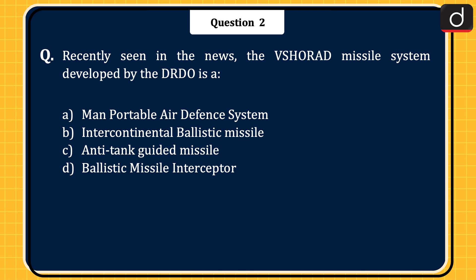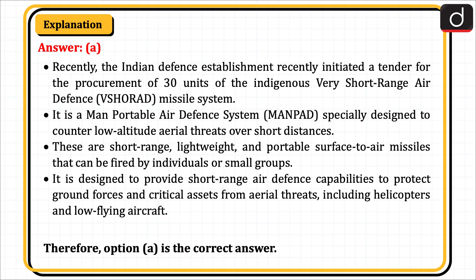The next question, recently seen in the news: the VSHORAD missile system developed by the DRDO is a — man-portable air defense system, intercontinental ballistic missile, anti-tank guided missile, or ballistic missile interceptor? The correct answer is option A, man-portable air defense system. Recently, the Indian defense establishment initiated a tender for the procurement of 30 units of the indigenous Very Short-Range Air Defense (VSHORAD) missile system. It is a man-portable air defense system (MANPAD), specially designed to counter low-altitude aerial threats over short distances. These are short-range, lightweight and portable surface-to-air missiles that can be fired by individuals or small groups, designed to protect ground forces and critical assets from aerial threats including helicopters and low-flying aircraft. Therefore, option A is the correct answer.